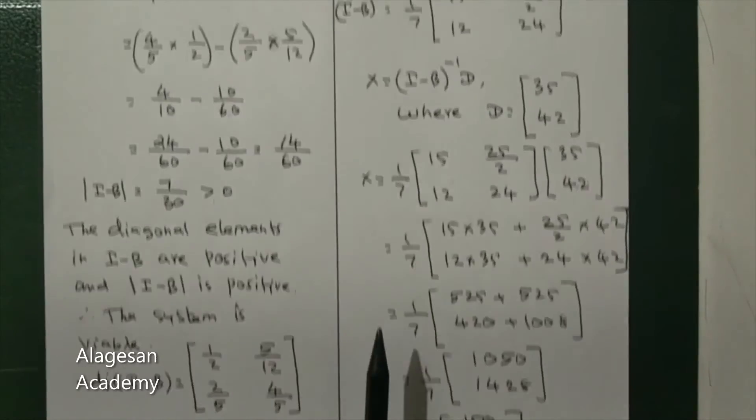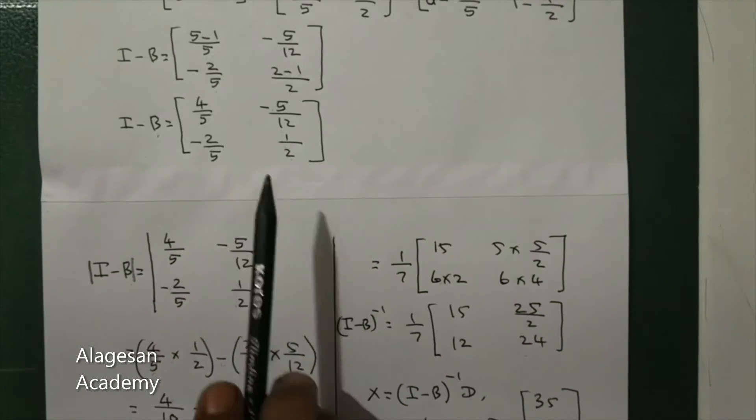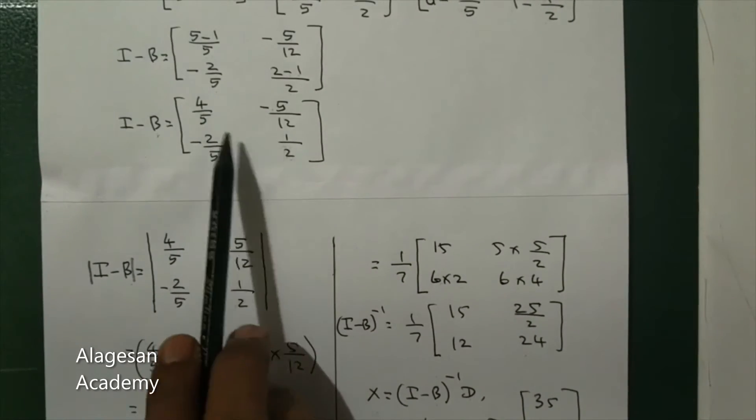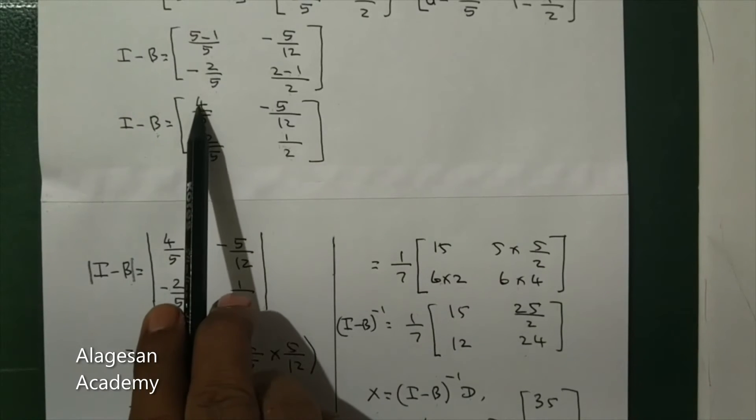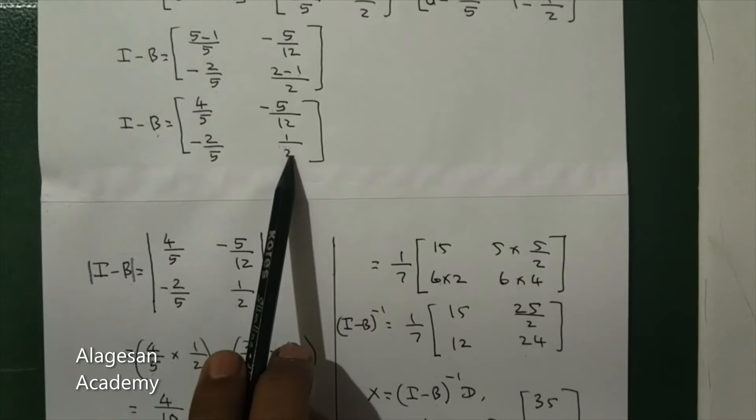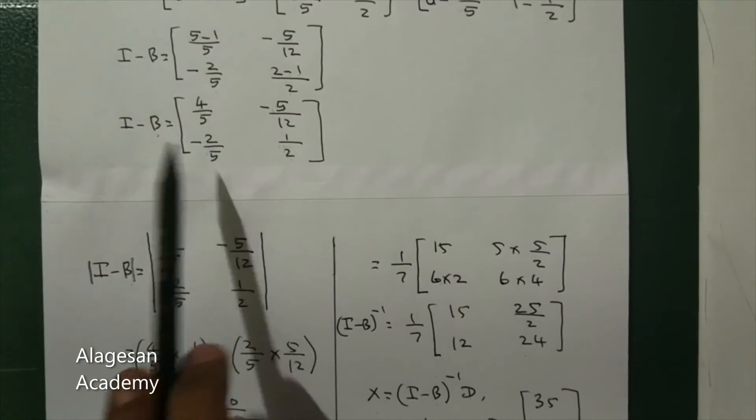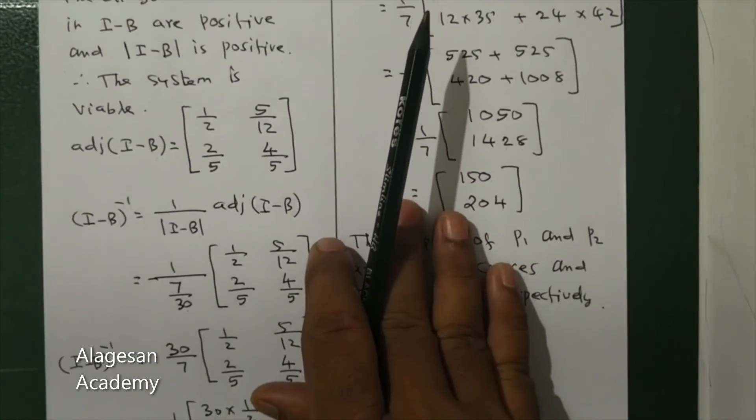Next we have to find adjoint of I minus B. For adjoint of I minus B, the two diagonal elements are interchanged and we change signs, so we get 1/2, 5/12, 2/5, 4/5.